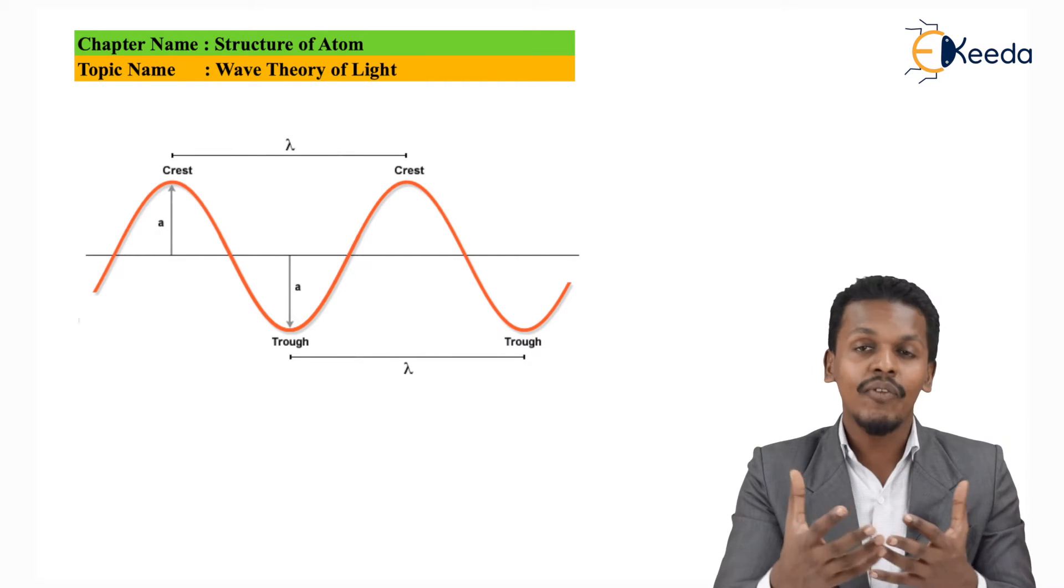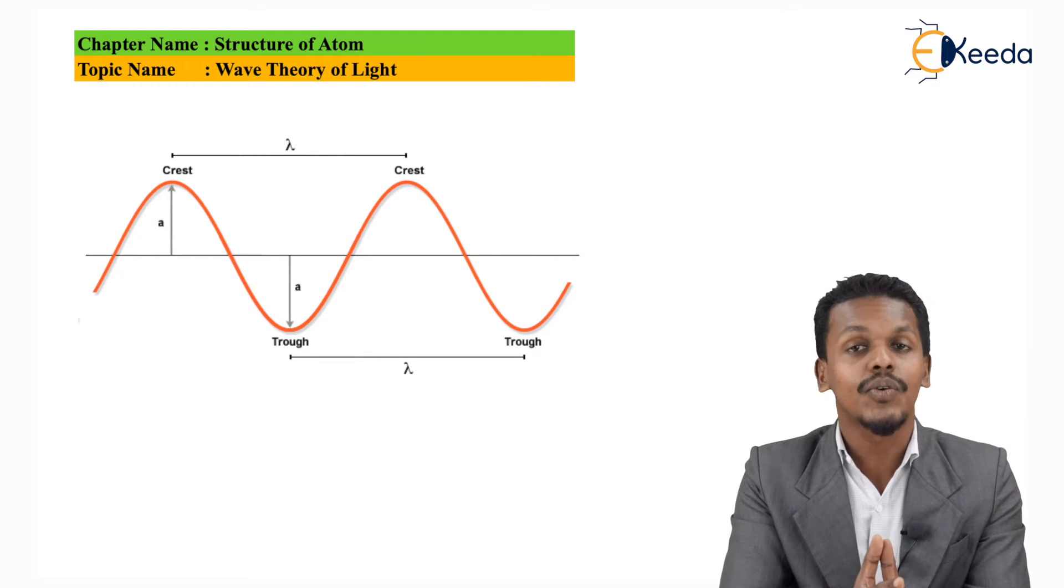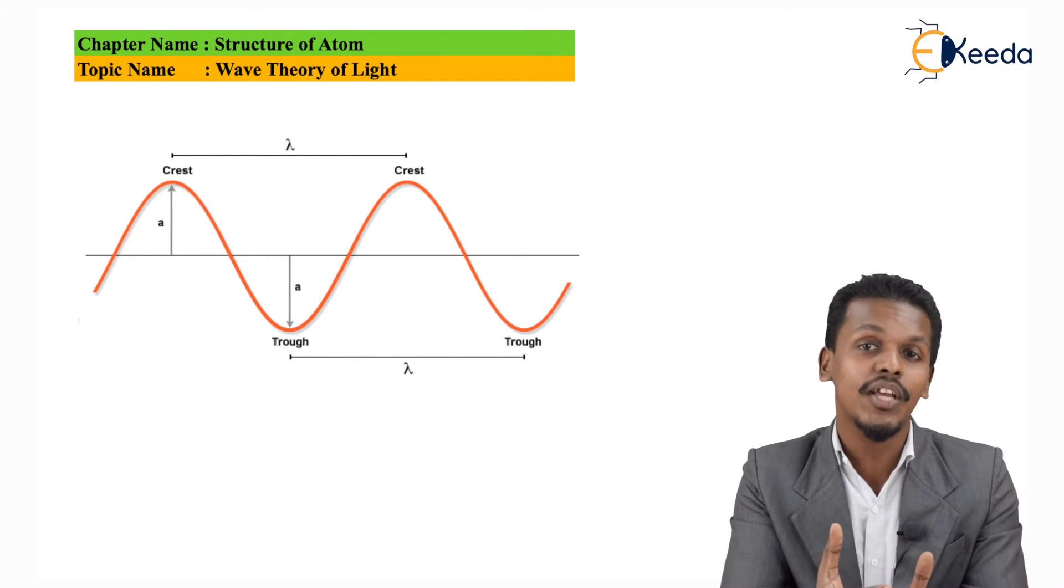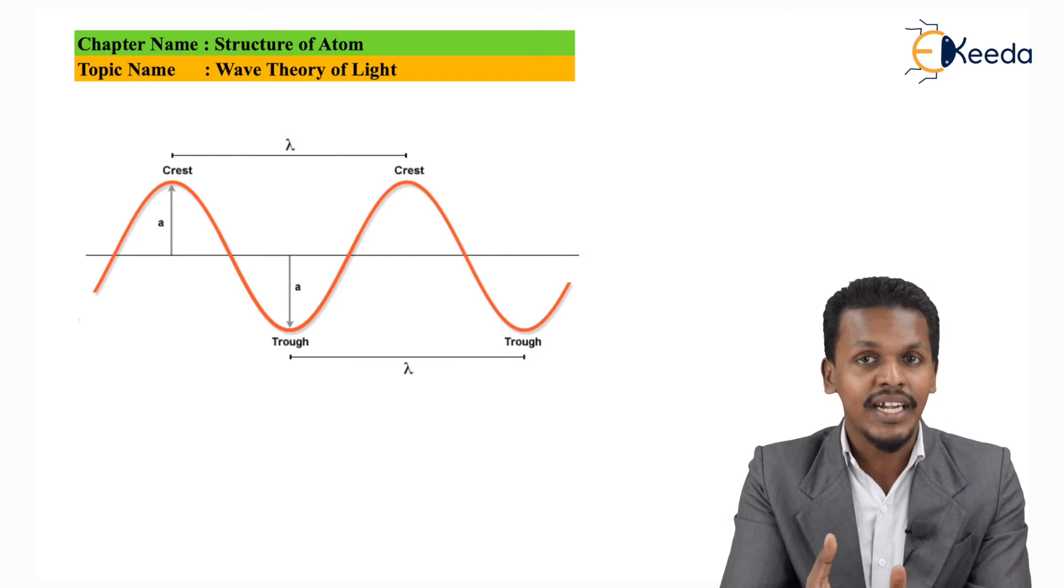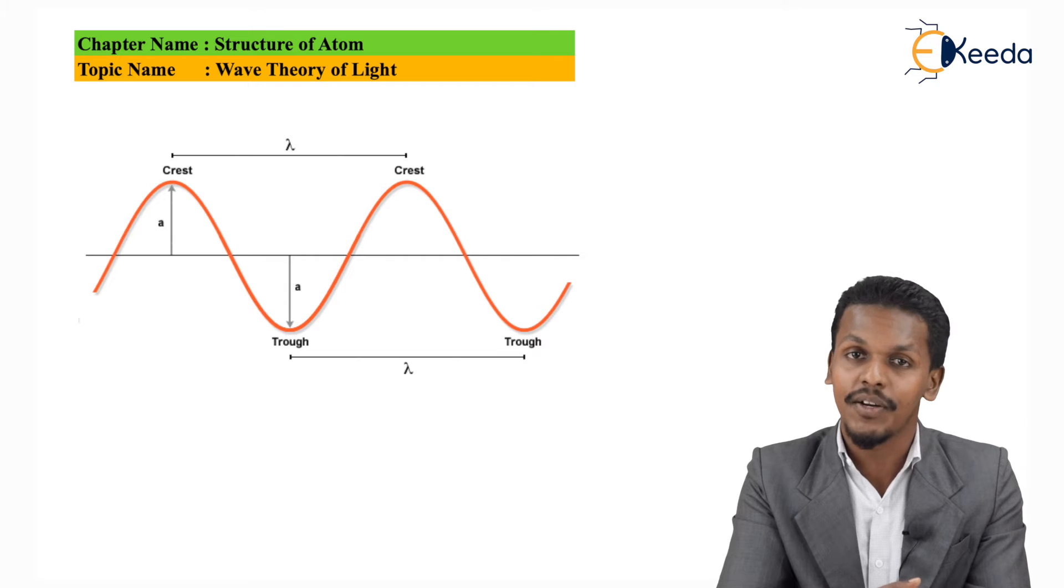So based on that, different waves are present in this cosmic world. We could also say that there are different types of waves, but the velocity of each electromagnetic wave is the same - that is the speed of light, 3 × 10^8 meter per second.